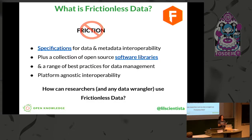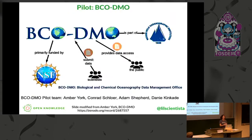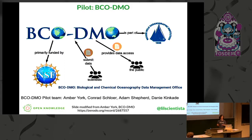The main question I want to talk about today is how can researchers and other data wranglers use frictionless data? To get into this question, I'm going to talk about one of our pilot use cases that's ongoing right now. It's with the BICO-DEMO group, which stands for Biological and Chemical Oceanographic Data Management Office. This group is funded by the NSF, and basically anyone that does oceanographic research in the US that's funded by the NSF submits their data to BICO-DEMO. I want to mention the team we're working with: Amber York, Conrad Schlower, Adam Shepard, and Danny Kincaid. I also shamelessly stole a bunch of these slides from Amber York — she gave a talk at csvconf.